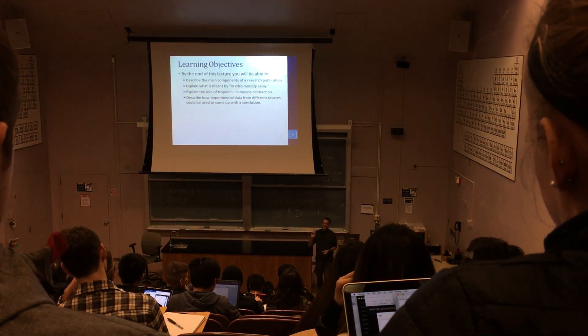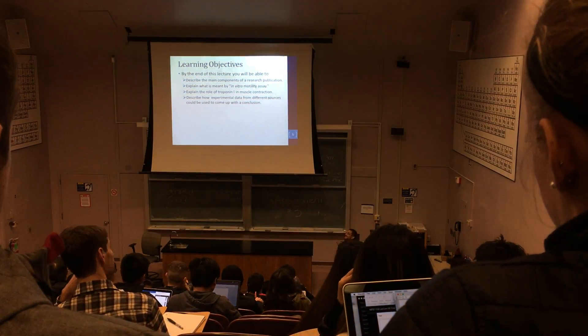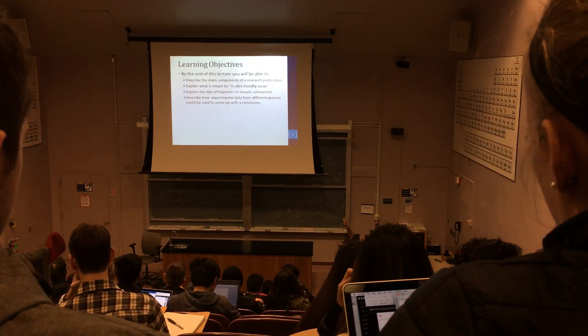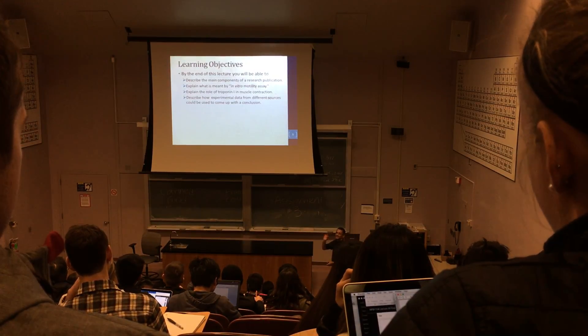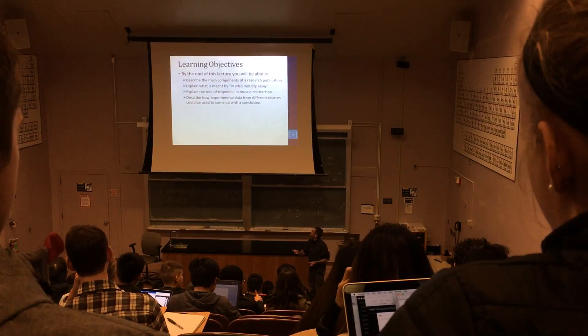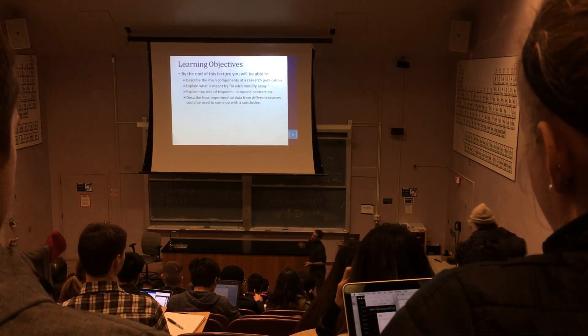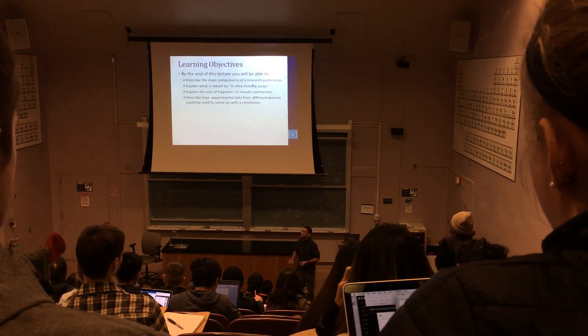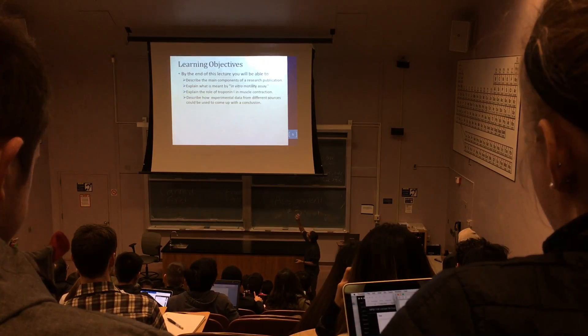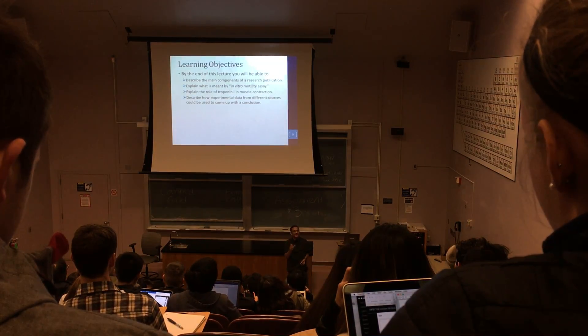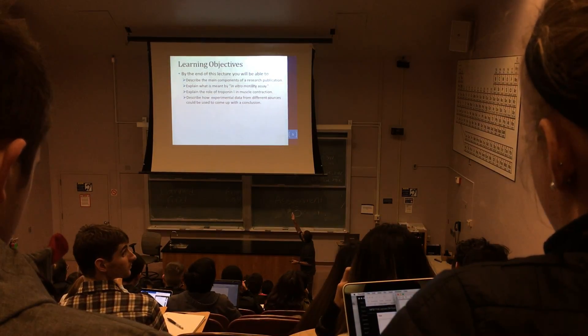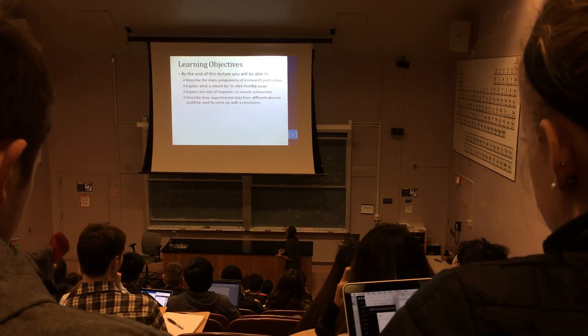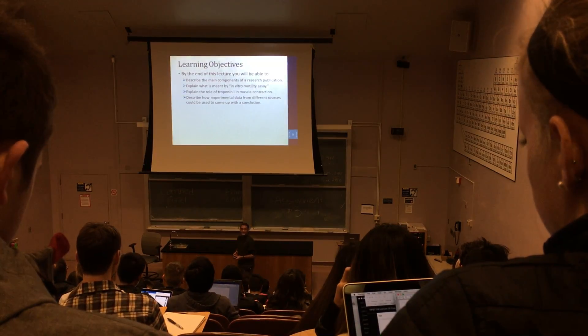However, the learning objectives of this class include being able to understand what are the basic components of a research paper, what is meant by a in vitro motility assay, which we'll break down in the paper, a little bit more about troponin and specifically, and how do we use different experimental data to derive a conclusion.